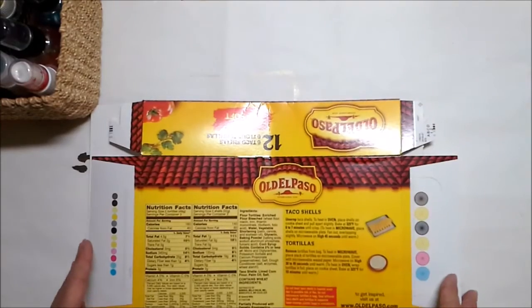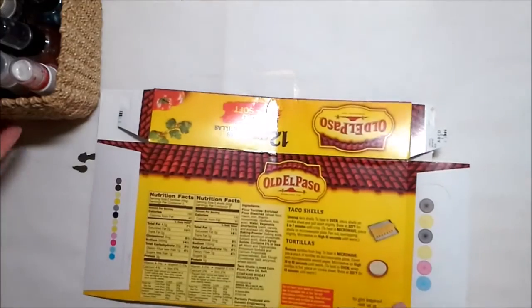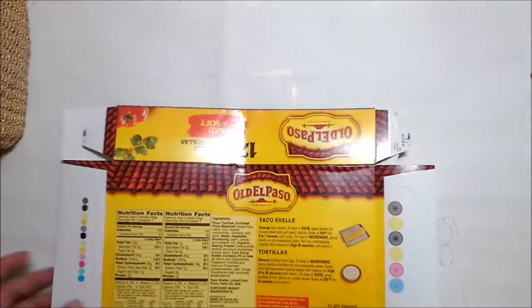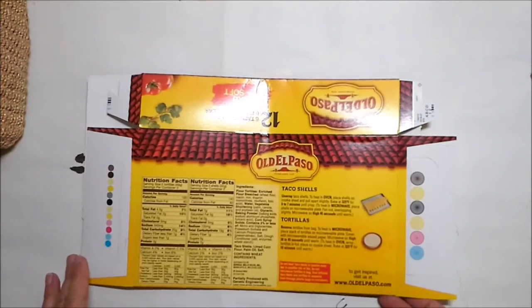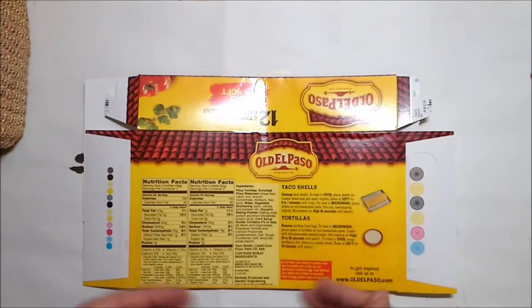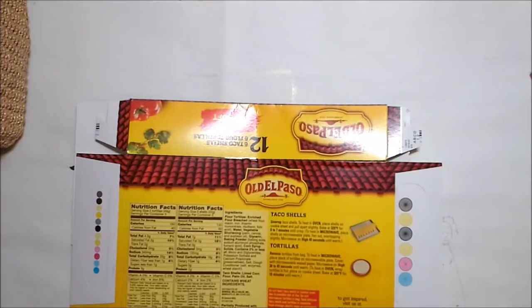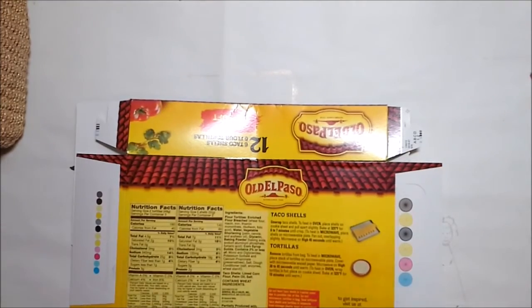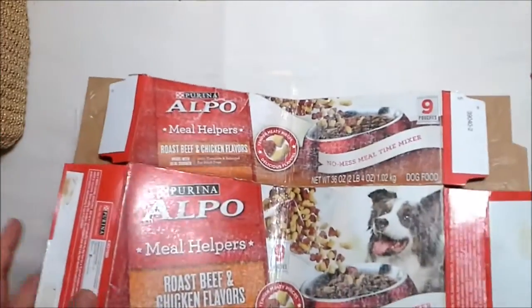What I wanted to do today y'all is just kind of take you through the process of making one of these little books. I've just, for an example, this is an old El Paso food container. The first thing that you're going to want to do is choose a box. I love tea boxes but tea boxes in this instance are not going to work because they usually open on the top. So they won't work. I would choose a spaghetti box, a toothpaste carton, something like this.